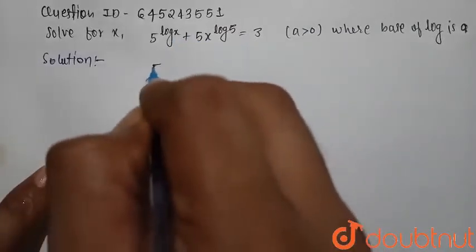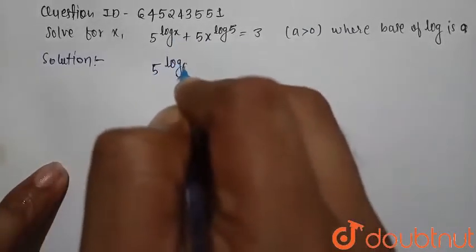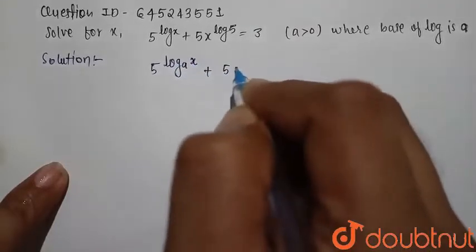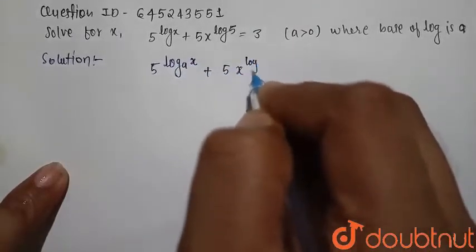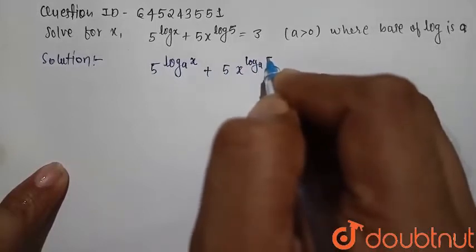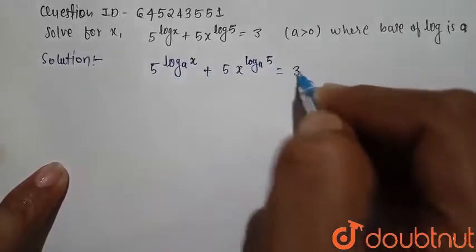We can write here 5 log base a x plus 5 x log a base 5 and this is equal to 3.